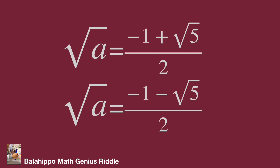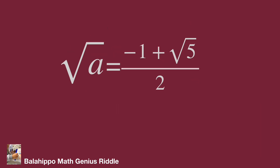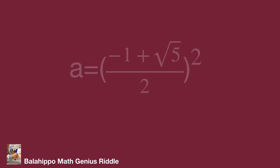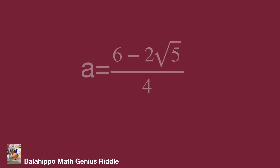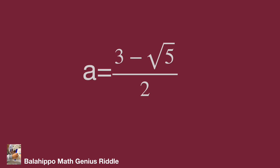The value for (negative 1 minus √5) over 2 is negative, so it is not a valid real root for square root of A. Therefore √A equals (negative 1 plus √5) over 2. Squaring both sides and expanding the right side, we get A equals (6 minus 2√5) over 4, which simplifies to A equals (3 minus √5) over 2. Those are all the values of A.